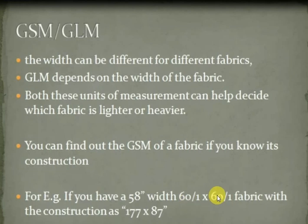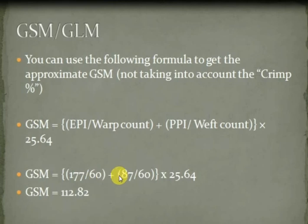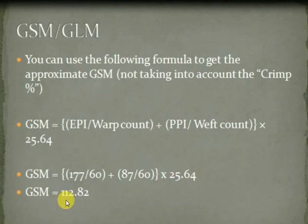Warp count is 60, weft count is 60, ends per inch is 177, and picks per inch is 87. We apply these values in the formula: GSM = (177 ÷ 60 + 87 ÷ 60) × 25.64. Both are cotton counts. When we calculate this formula, the fabric GSM comes out to 112.82 grams per square meter.